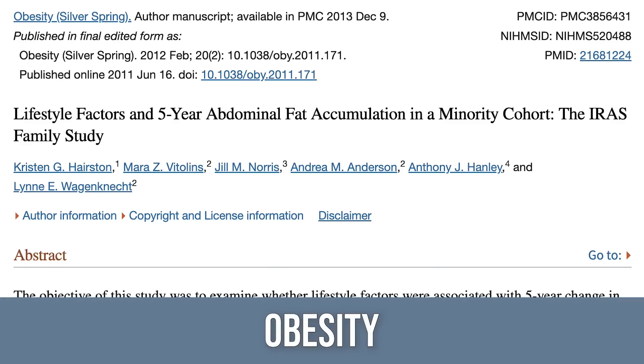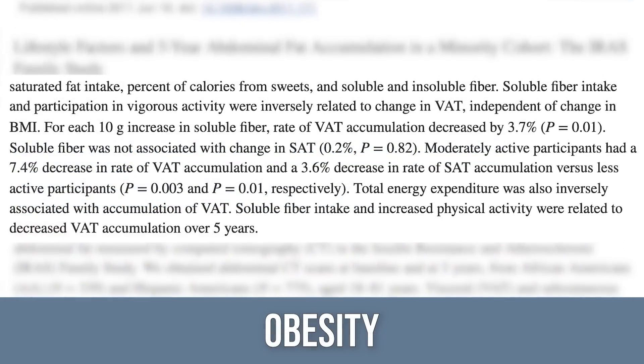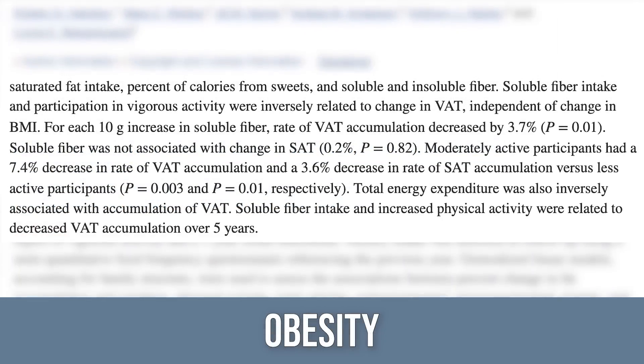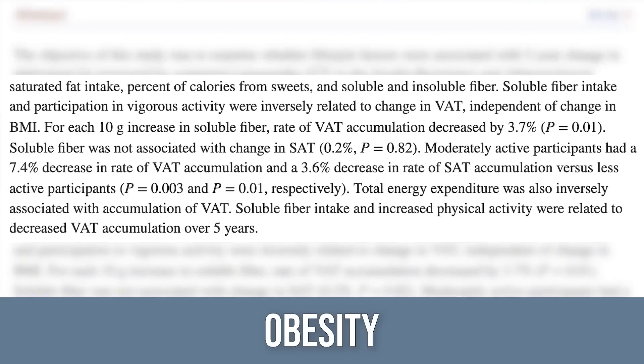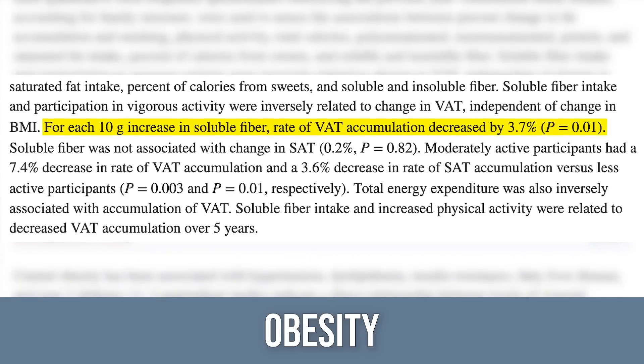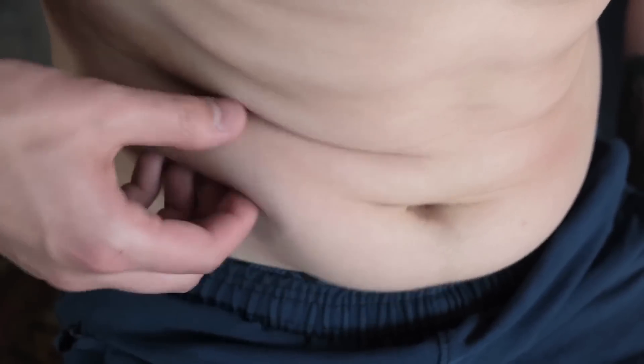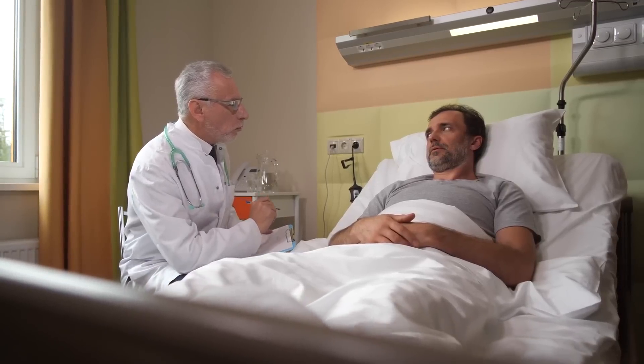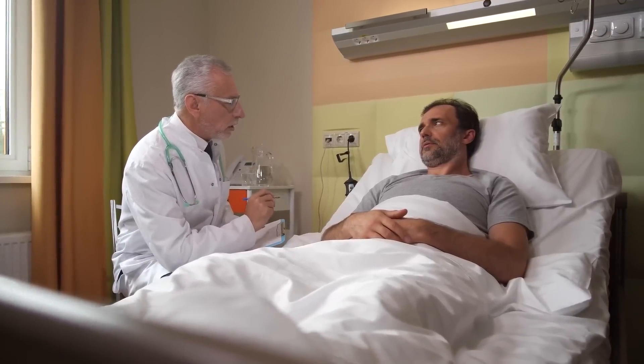We look at a study published in the journal Obesity that took a look at CT scans of over a thousand people over a five-year period. They found that for every 10% increase in soluble fiber intake, there is a 3.7% decrease in visceral adipose tissue — the pot belly fat underneath our subcutaneous fat that surrounds our organs, the metabolically active, dangerous, inflammatory fat linked with so much disease and inflammation.